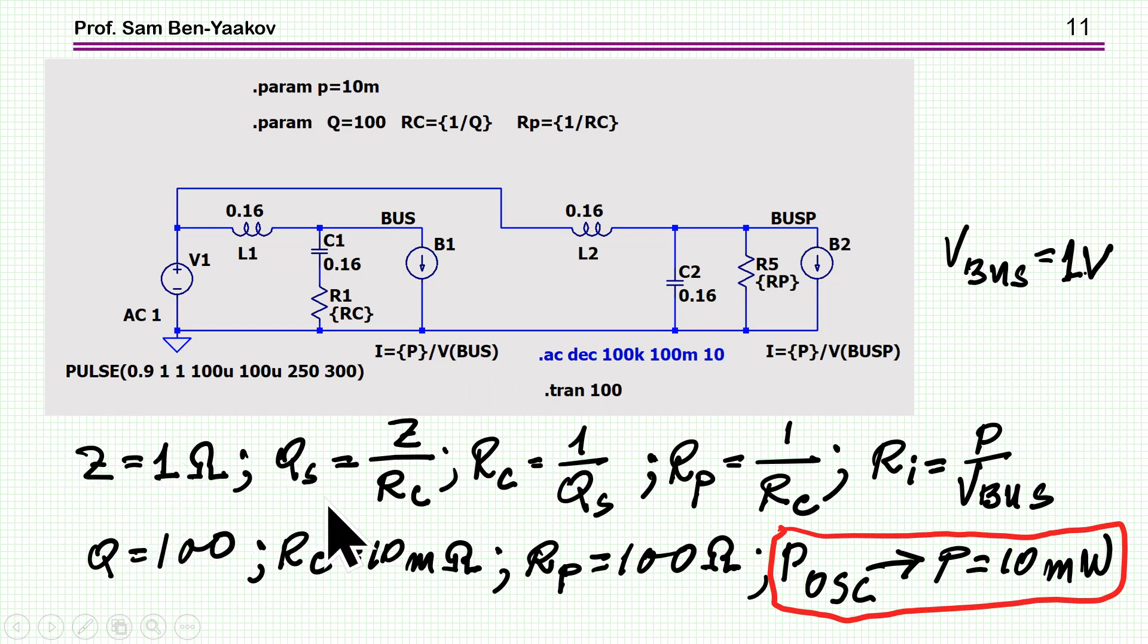So, over R_C, all these are what I've shown earlier. So, now, let's take a specific example. So, as I've said, Z is 1, Q_S is Z over R_C. This is the definition of the quality factor in this series resonant, from which R_C is 1 over Q, R_P is 1 over R_C, because Z is 1 and Z squared is also 1, and this is the incremental resistance, R_I is P over V_bus. So, now, I've taken a case of Q equal to 100, R_C to 10 milliohms, R_P comes up to be 100 milliohms, because it's 1 over the Q here, the Z here is 1, so 1 over 10 milliohms is 10 ohms. So, what I'm getting here is that the instability point is when the power is larger than 10 milliwatts. This is for this particular case, of course.